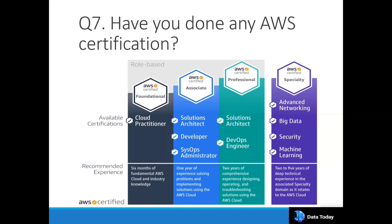With two or more years of experience — having designed, operated, and troubleshot AWS solutions with high availability — you can pursue Professional-level certifications like DevOps Engineer or Solutions Architect Professional. With more than five years of experience and deep technical expertise in a specific domain such as machine learning, security, big data, or networking, you can go for Specialty certifications in those areas.